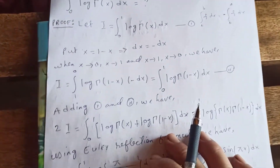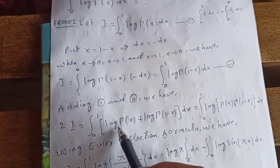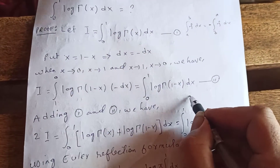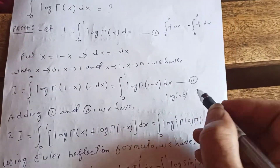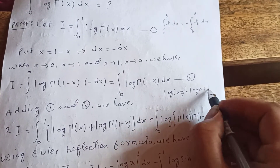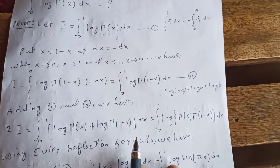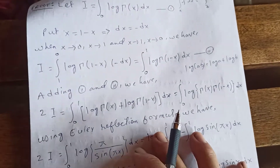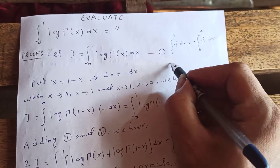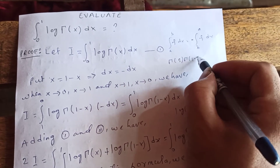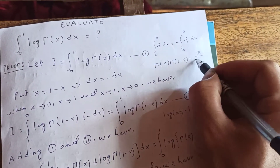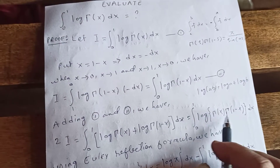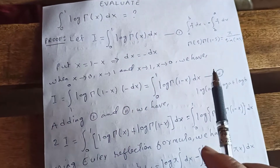Now adding equations 1 and 2, we get 2I equals the integral from 0 to 1 of log(Γ(x)) plus log(Γ(1 minus x)) dx. Using the log property that log(ab) equals log(a) plus log(b), this becomes the integral from 0 to 1 of log(Γ(x)·Γ(1 minus x)) dx. Applying the Euler reflection formula, Γ(s)·Γ(1 minus s) equals π over sin(πs). Replacing s by x gives us the same expression here.